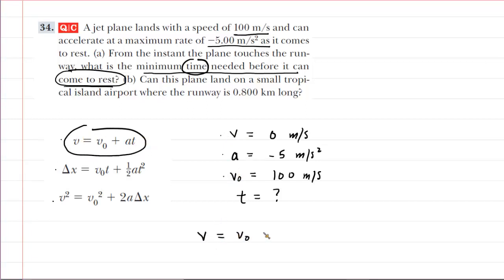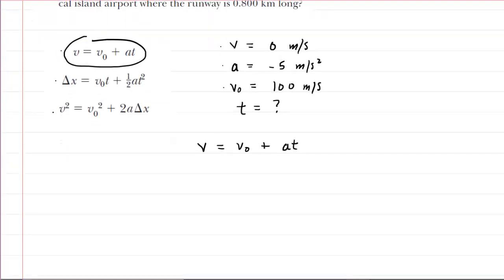And then since we're trying to solve that for time, we might want to algebraically rearrange the equation. So we could do that first by subtracting the initial velocity from both sides. We now have V minus V0 is equal to AT. And then to finish solving for time, we will divide both sides of the equation by the acceleration A. And now we have time isolated.